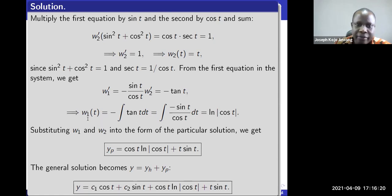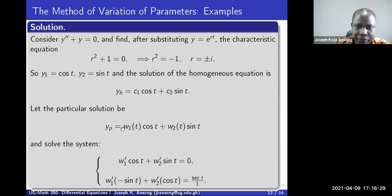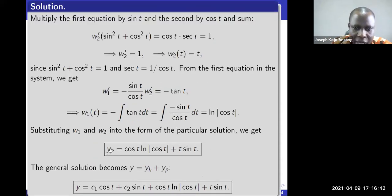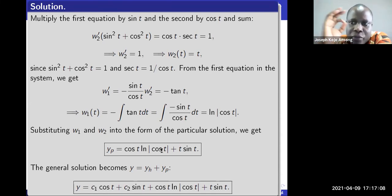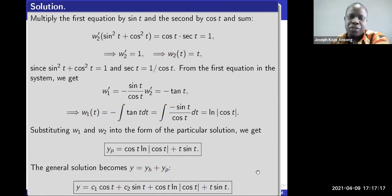Now plug w1 and w2 back into the particular solution form: yp = cos(t)·ln|cos(t)| + t·sin(t). The general solution is the homogeneous solution plus the particular solution: y = c1·cos(t) + c2·sin(t) + cos(t)·ln|cos(t)| + t·sin(t).